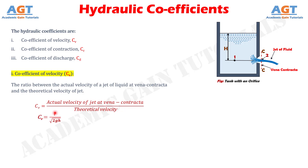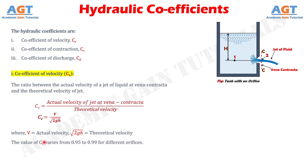This is again equal to V divided by root over 2gH, where V represents the actual velocity and root over 2gH represents the theoretical velocity. The value of CV varies from 0.95 to 0.99 for different orifices, depending on the shape and size of the orifice and on the head under which flow takes place.